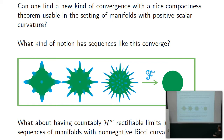Flat convergence was defined by Federer and Fleming to deal with minimal surface theory. In flat convergence, the dimension is kept the same or the limit is zero, and the limits are countably H^m rectifiable and integer-weighted. Federer and Fleming proved a compactness theorem depending only on diameters and mass (volume) of the sequences, and used this to solve the Plateau problem — getting an H^m rectifiable limit of minimizing currents.